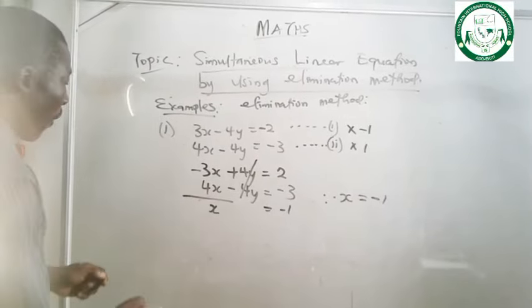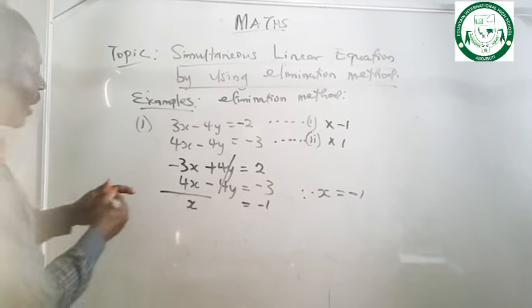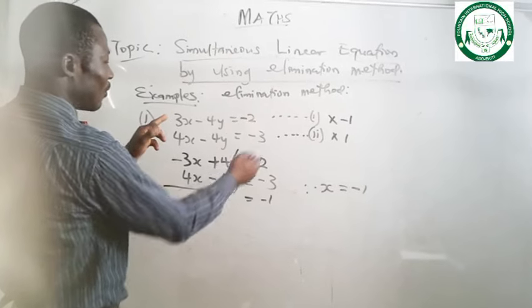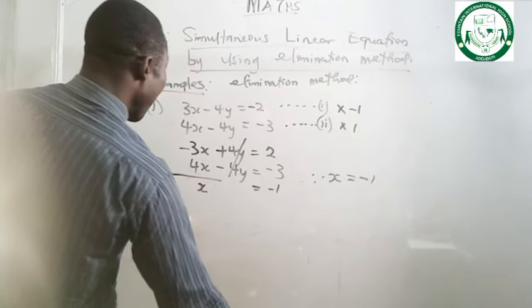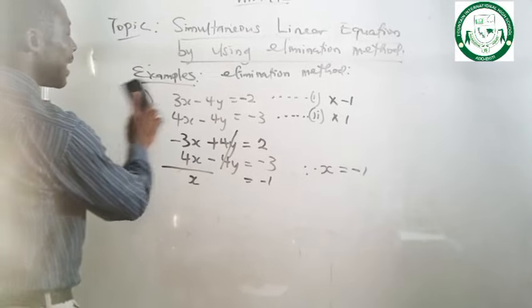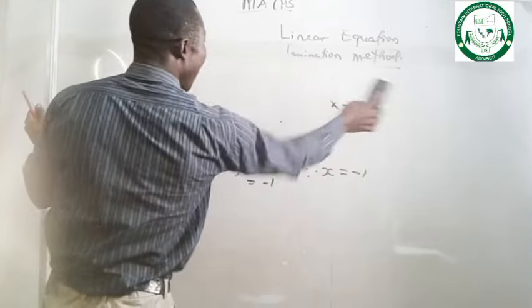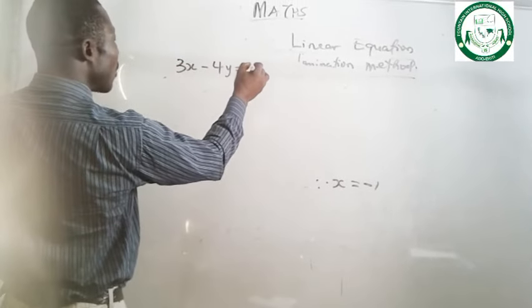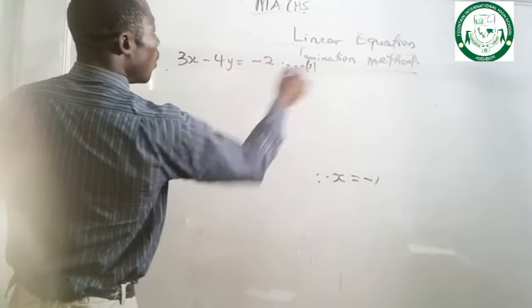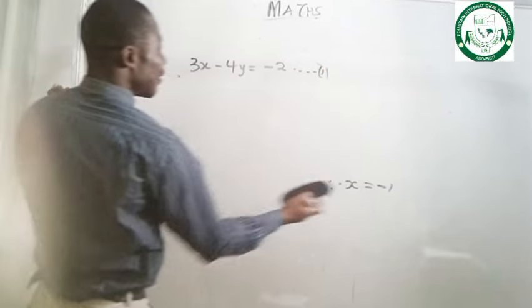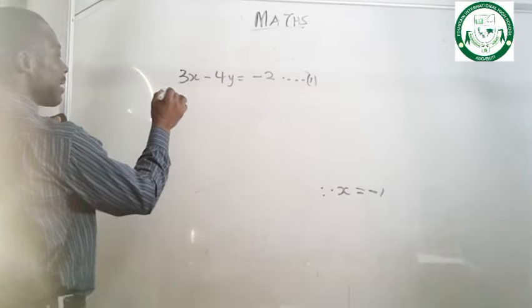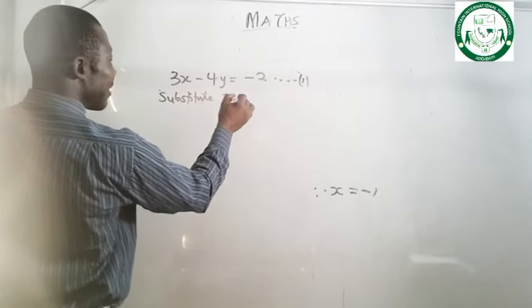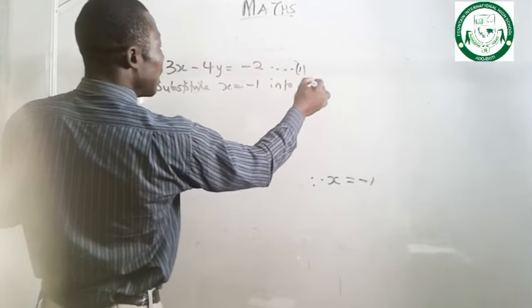We need to get the value of y also. We can make use of any of the equations. Let's use equation 1, which says 3x minus 4y equals to minus 2. We know the value of x is minus 1, so let's substitute x equals to minus 1 into equation 1.